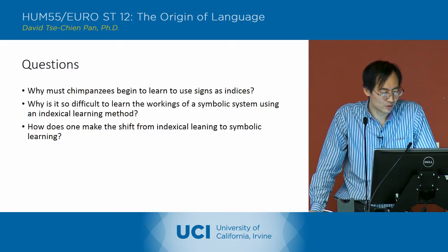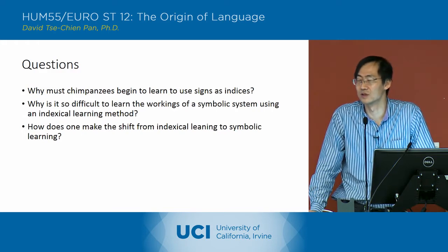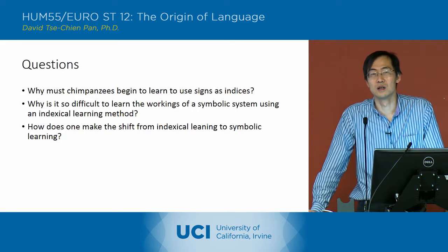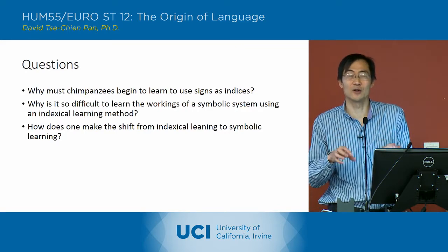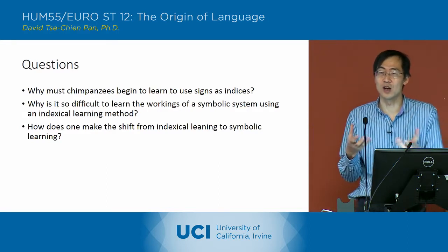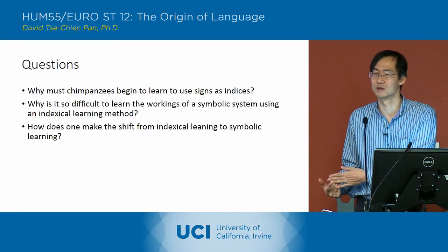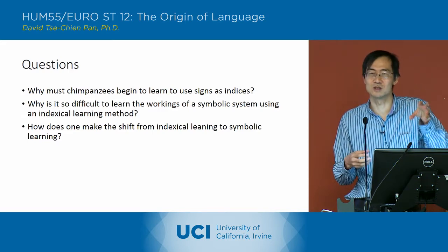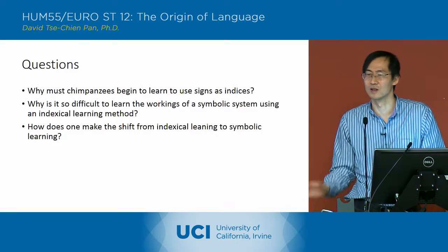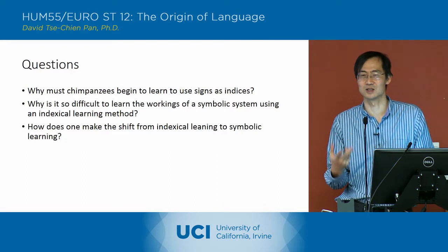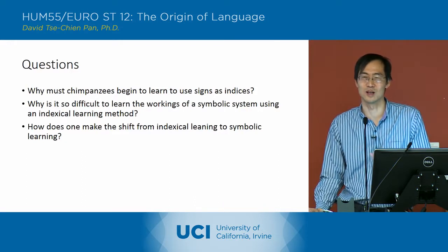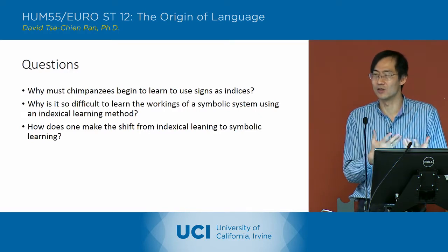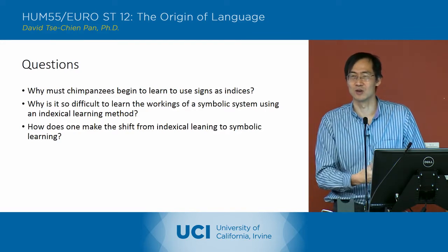How does one make the shift from indexical learning to symbolic learning? You're learning the combinations of the two signs — basically, how the signs relate to each other. That's the key. You're not just trying to figure out how the signs relate to the objects. You have to understand there's a grammar: this sign goes with those two objects and this other sign goes with these other two objects. One verb takes these two nouns; the other verb takes these other two nouns. You understand the logic whereby one verb goes with liquids and the other with solid foods, and that logic lets you add new vocabulary items without getting confused.